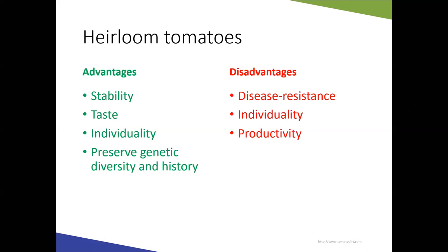Heirlooms also preserve genetic diversity and history. Some of these varieties have been passed down for decades or hundreds of years and have interesting stories associated with them. One example is the mortgage lifter tomato, developed by somebody in West Virginia, who was able to pay off the mortgage on their house by selling this particularly desirable type of tomato.